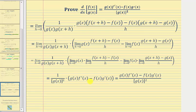Multiplying through: the first limit gives one over g(x) squared; the limit of g(x) is just g(x); the difference quotient for f(x) gives f′(x); the limit of f(x) is f(x); and the difference quotient for g(x) gives g′(x). This yields the quotient rule: g(x)·f′(x) minus f(x)·g′(x), all divided by g(x) squared. And now we've proven the quotient rule — I hope you found this helpful.